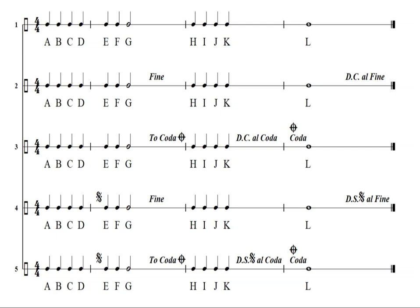In line three, we pass the 'to coda' and make a note of it but ignore it the first time through. After the letter K, we have the DC Al Coda — go back to the beginning and this time skip to the coda. So the second time through, after E, F, G, we go to L. Line three again: A, B, C, D, E, F, G, H, I, J, K — A, B, C, D, E, F, G, L.